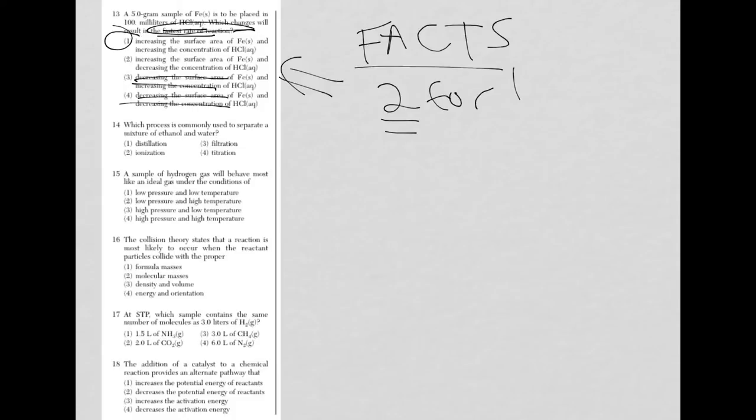Question 14, which process is commonly used to separate a mixture of ethanol and water? You've got to remember that a mixture—you need to know definitions here—is two or more substances that are just physically combined. It's not a chemical reaction, they're just mixed with one another. You want to also know your definitions for your four choices. You're dealing with two liquids here, ethanol and water. So it's going to be separation by boiling point, which is distillation.